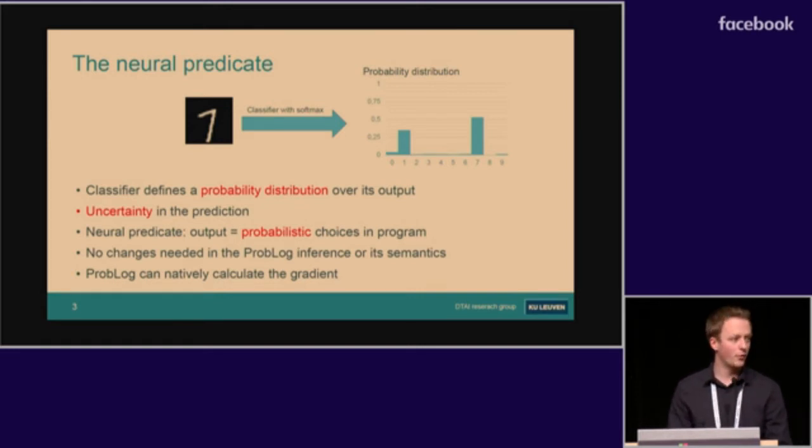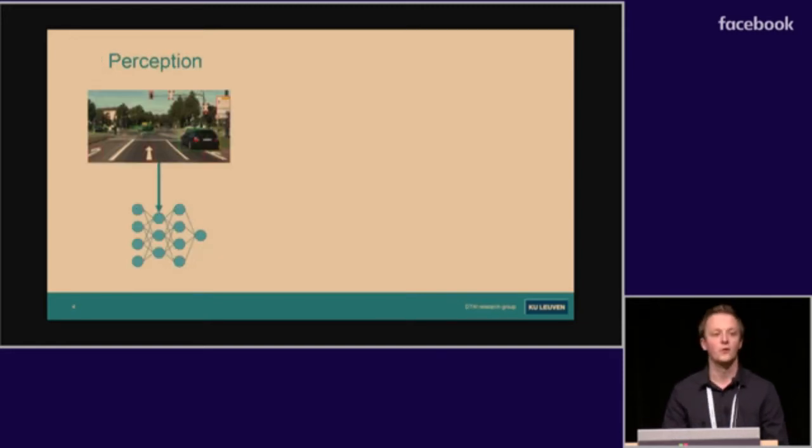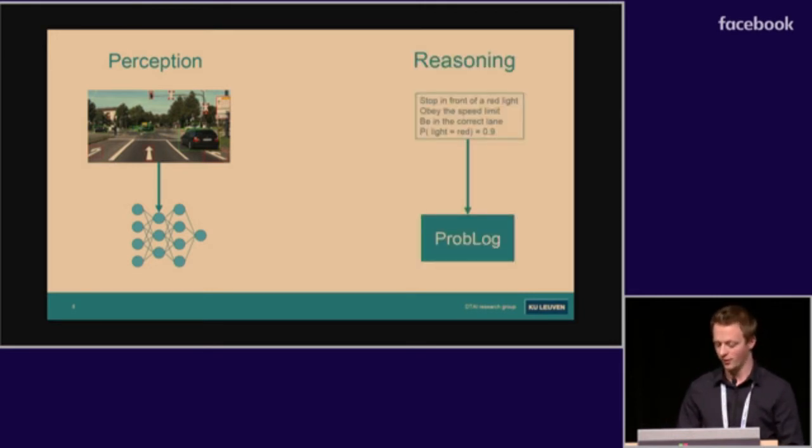Thanks to the power of ProbLog, we can also natively calculate the gradient with respect to these probabilities. The perception task is still solved by the neural network, while the reasoning happens in our ProbLog program.